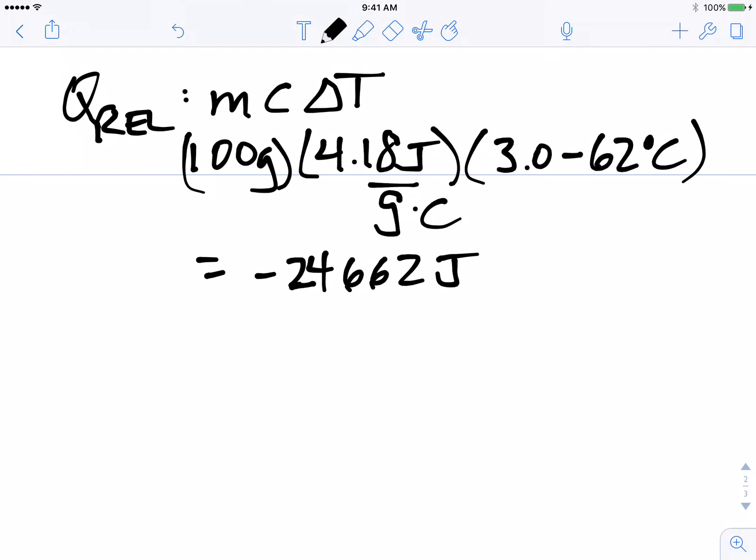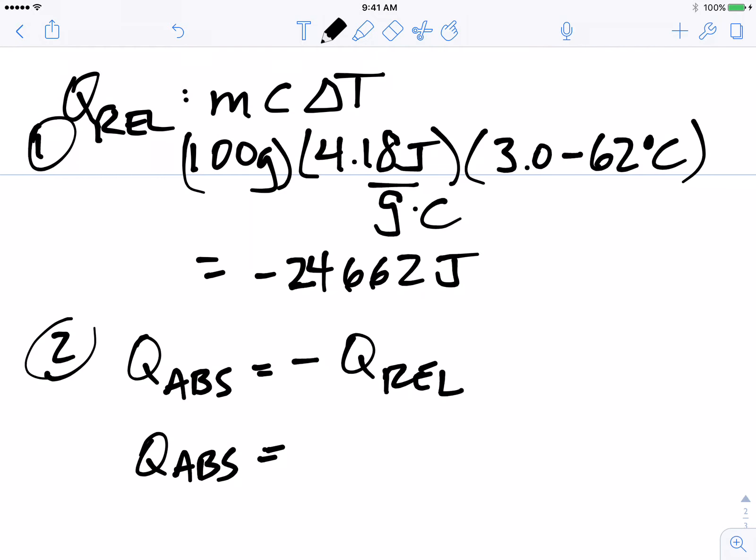Now, the second part of this in terms of our steps was, what we're saying is that if the Q that is absorbed by one substance is going to be equal to the negative of the heat that is released by another substance. So with that in mind, if the hot water released negative 24,662 joules, that means that the ice absorbed that same amount. So we know that the Q absorbed for the ice is a positive 24,662 joules.